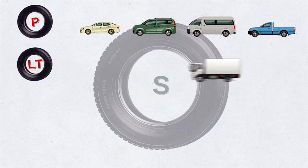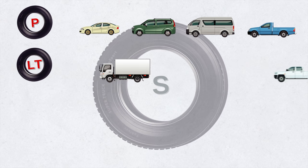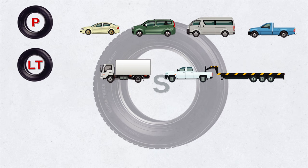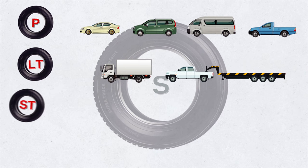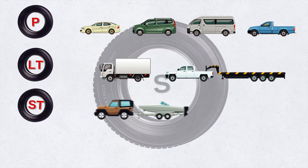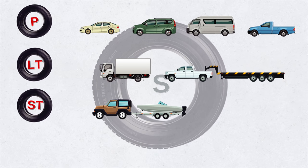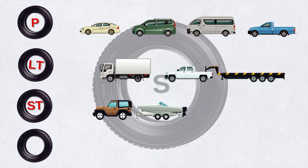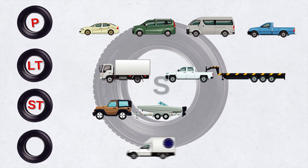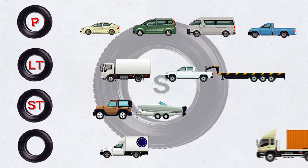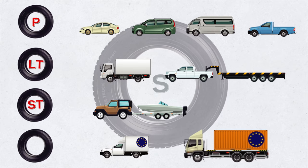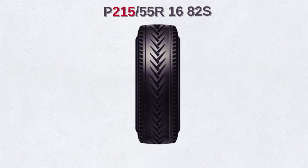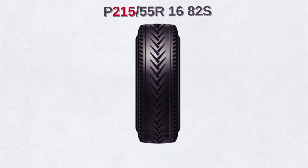The letters LT indicate it's a light truck tire, designed for vehicles that are towing trailers or have three-fourths or one-ton load capacity. ST is for special trailers like boat trailers, utility trailers, or trailers with fifth wheels. But if there's no letter at the beginning of the code, this means you have a metric tire — in other words, it's a European metric — and it might have different load capacity.